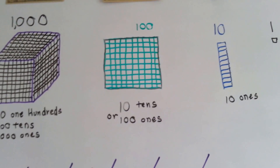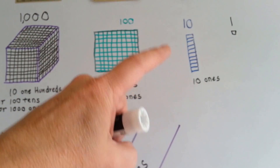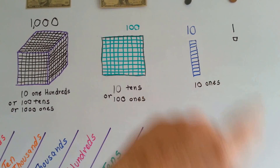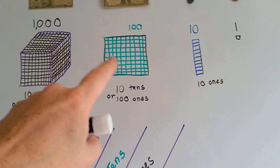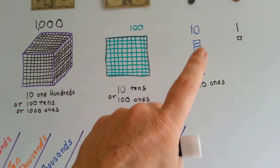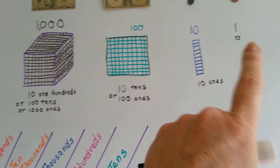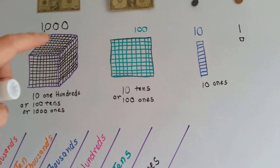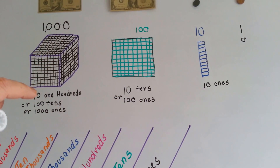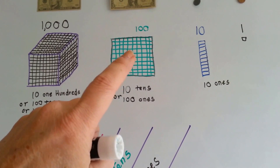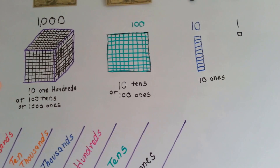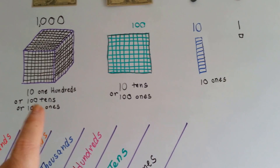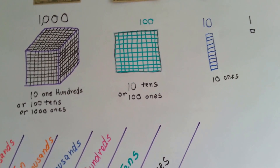Well, that's what we're doing today. This bar of ten is the same thing as ten ones, ten of these. This flat of a hundred is the same thing as having ten of these or a hundred of these — a hundred ones. A cube of a thousand is the same thing as having ten one hundreds, ten of these stacked up on top of each other to form a cube, or a hundred of these tens or a thousand of these ones.